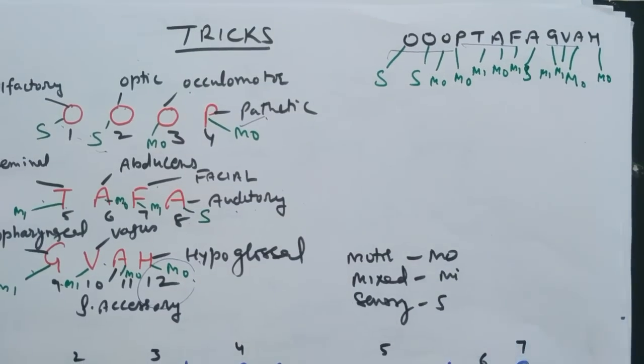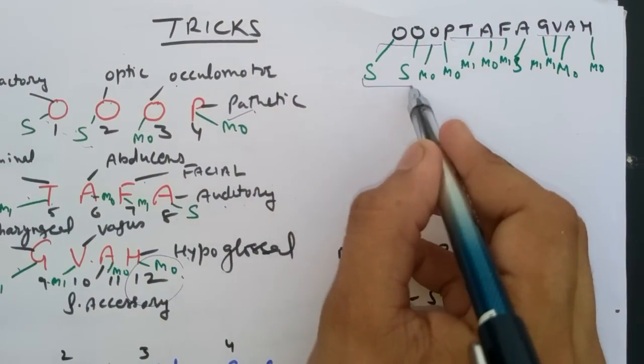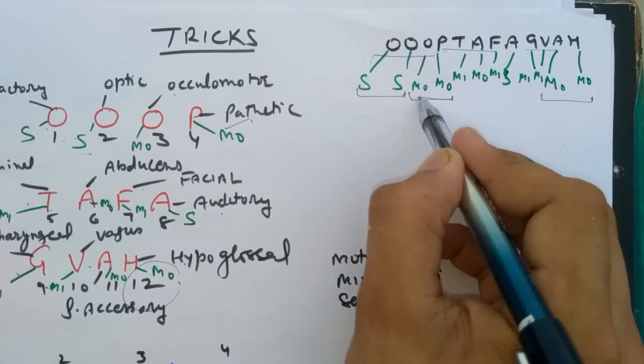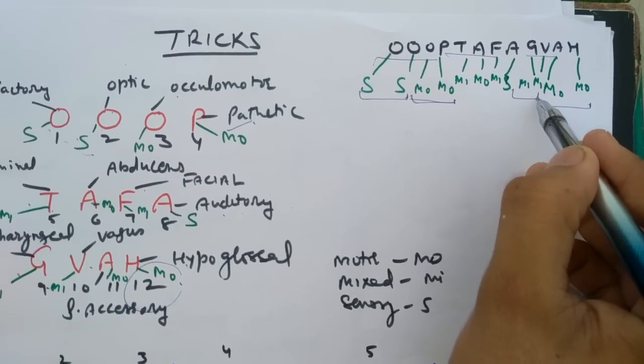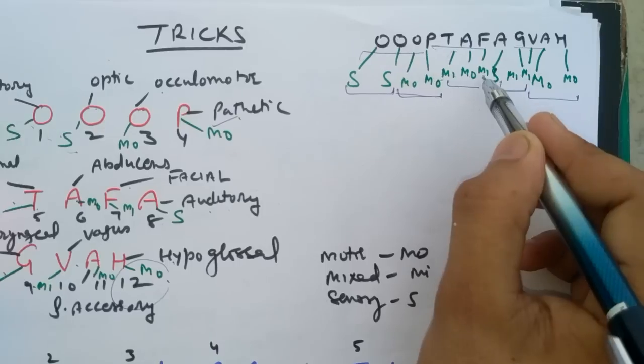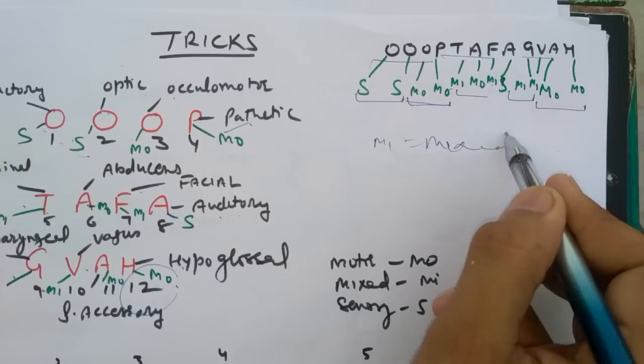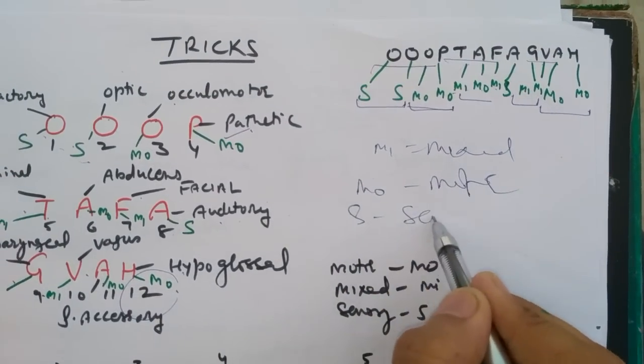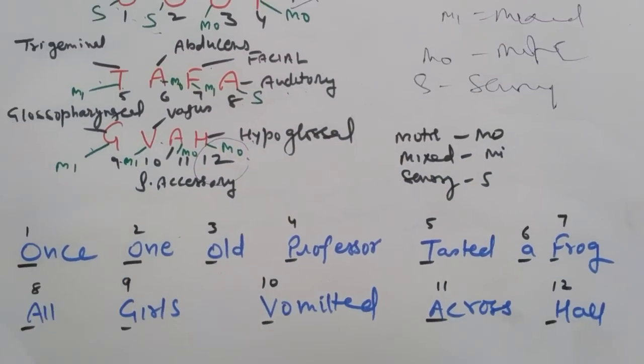And how is the nature? Write the word OTOT TAFA GAVA. Here, first two are sensory, last two are motor, then third and fourth are motor again, and ninth and tenth are mixed. Then you have to write S, Mo, Mi, S, Mi. That is: sensory, motor, mixed, sensory, mixed. I hope it is very helpful for you.